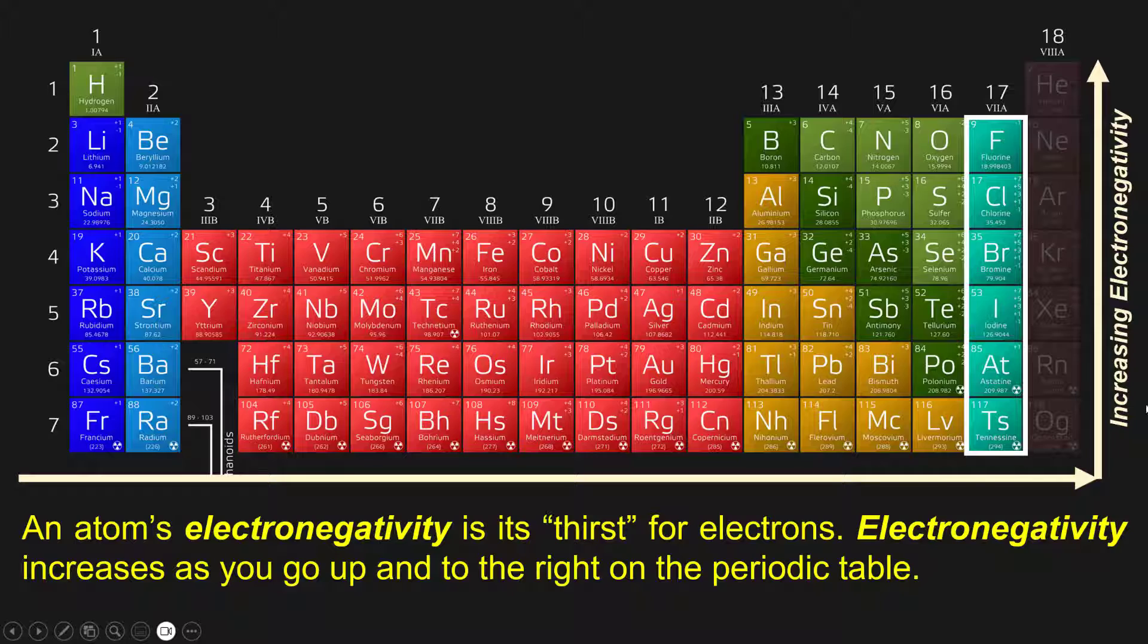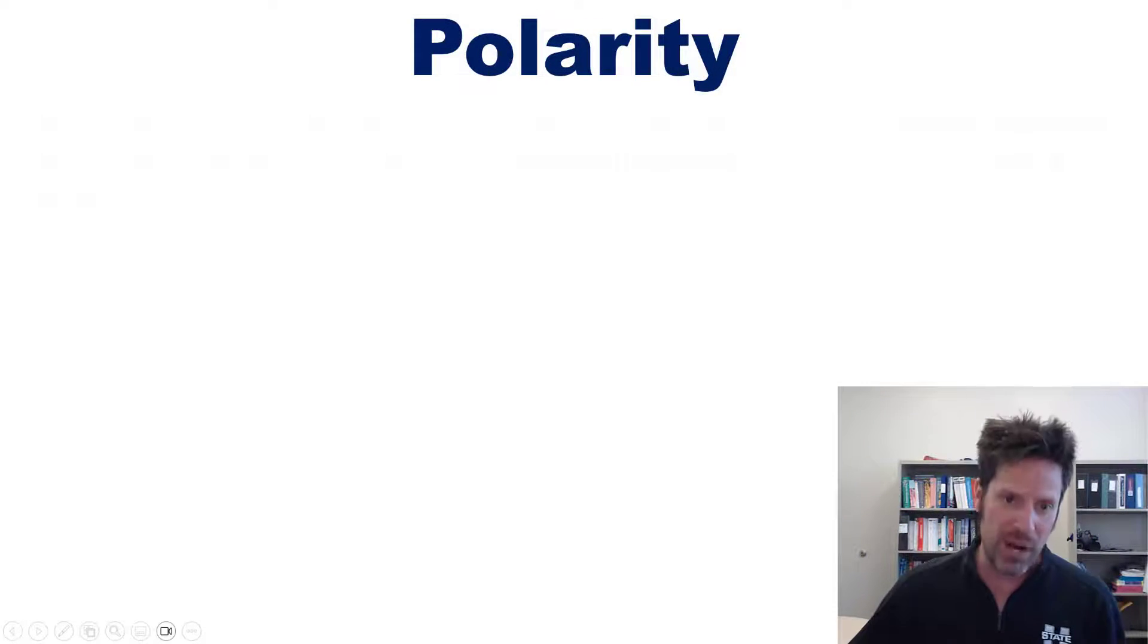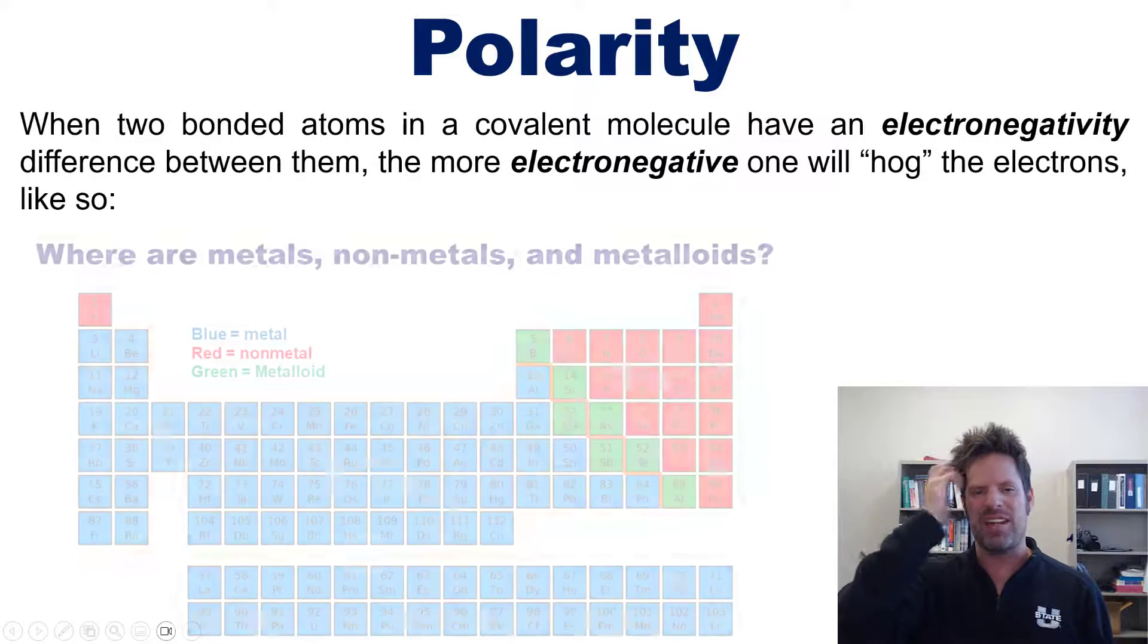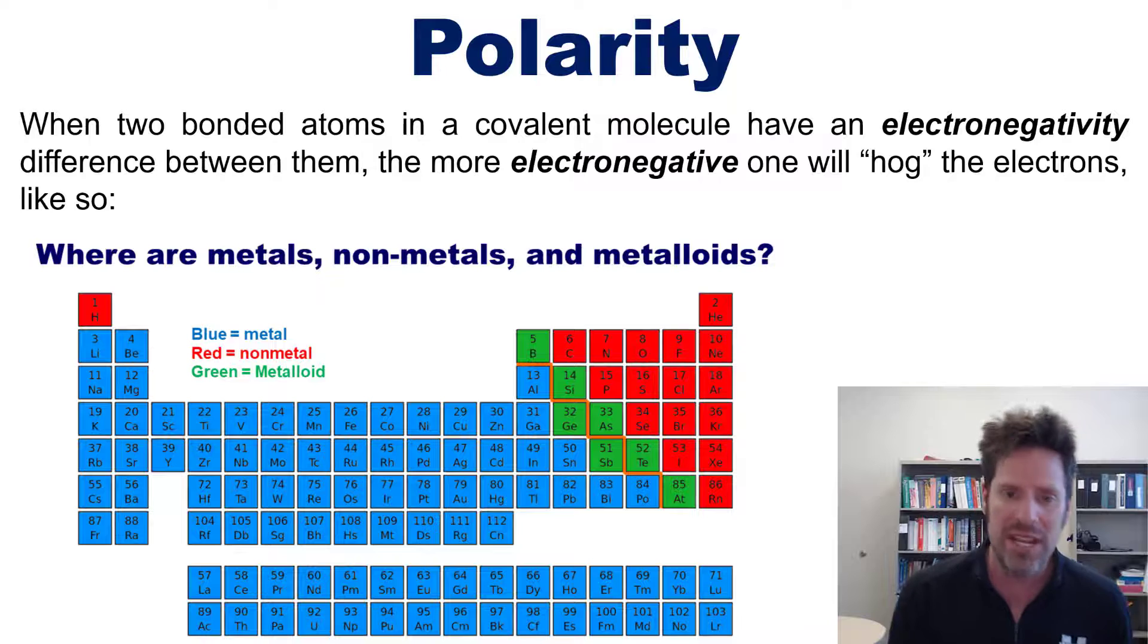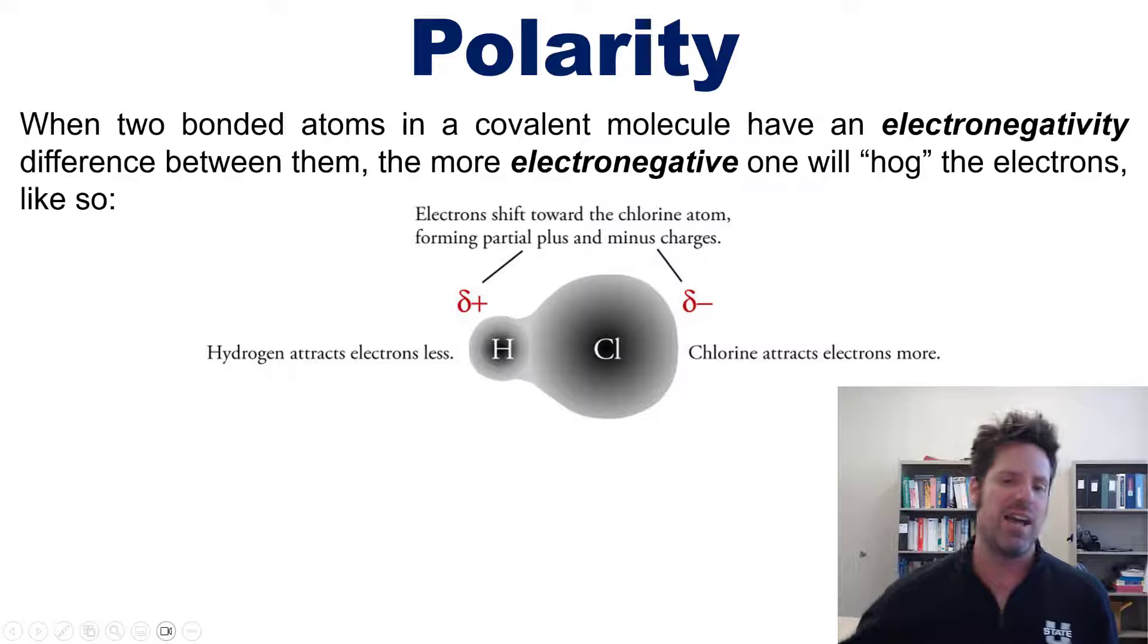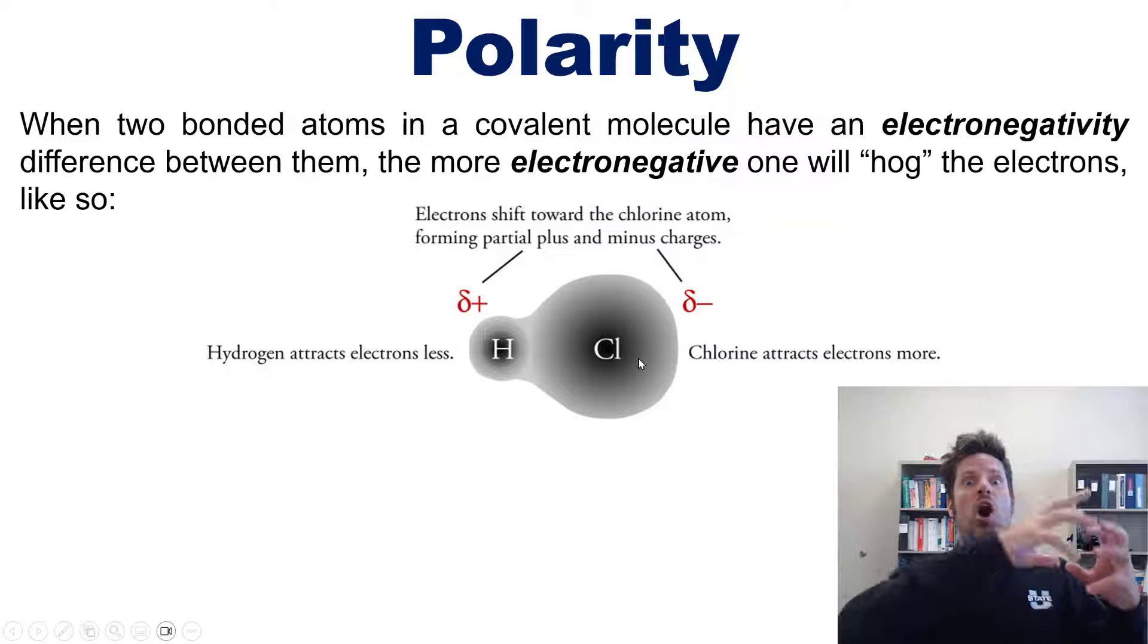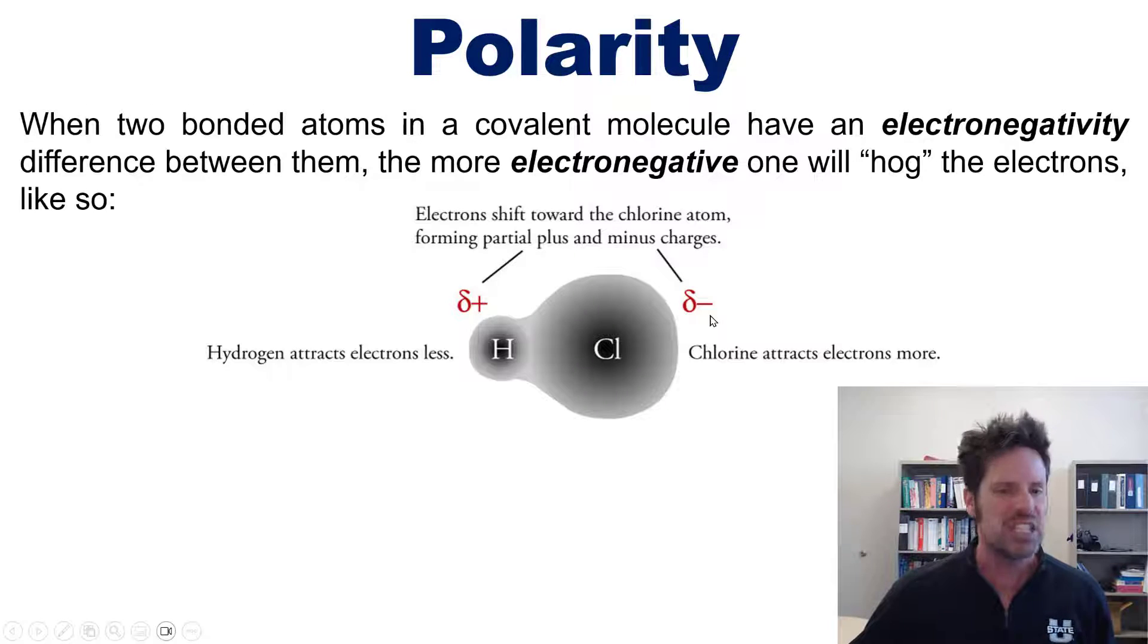Now this stuff tails beautifully into our next topic: polarity. You see, when two bonded atoms in a covalent molecule—that is, a molecule between all non-metals—have an electronegativity difference between them, the more electronegative one will hog electrons to itself. Like this: you see hydrogen and chlorine are bonded together. Chlorine is much more electronegative, hence it hogs those shared electrons towards itself, giving it a strong partial negative charge and the hydrogen a strong partial positive charge.